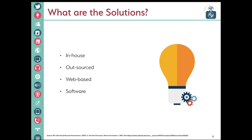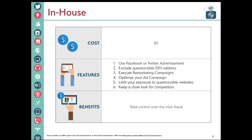So what are the solutions? The solutions are in-house, outsourced, and web-based software. If we decide to go for an in-house solution, it will cost us $0. We would use Facebook and Twitter advertising, exclude IP addresses, and execute remarketing campaigns ourselves. The benefit is that we will have control over click fraud, manage everything, and not have to go through third parties.